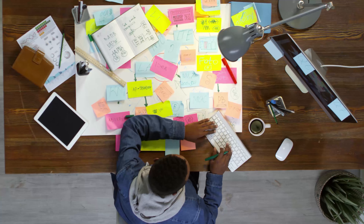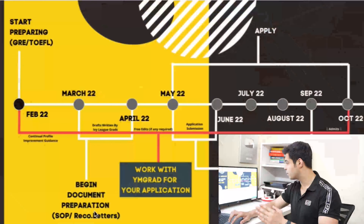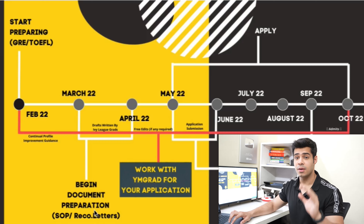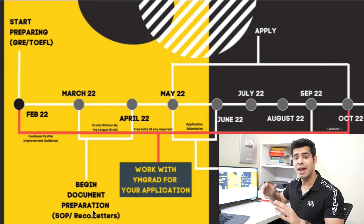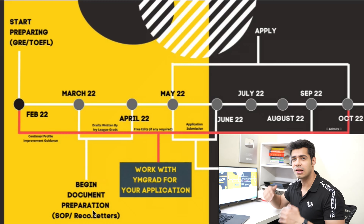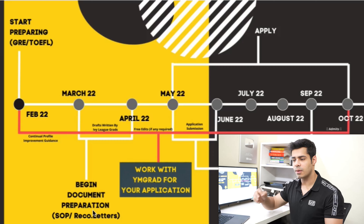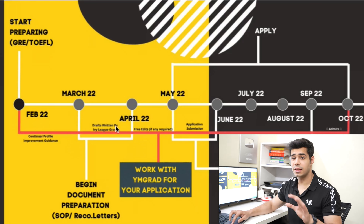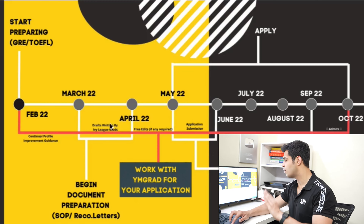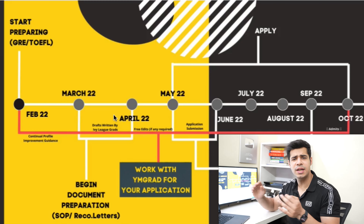Working on SOPs and LOAs is important if you're doing the process yourself. If working with us, Ivy League graduates will draft them from scratch using your inputs, ensuring they're unplagiarized, grammatically correct, and substantive — with free revisions. Doing it yourself for the first time can be daunting; it can take one to two months to reach a final version. By March or April, you should have at least a 99% finalized version.